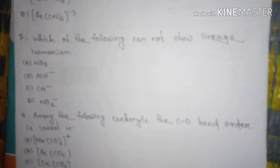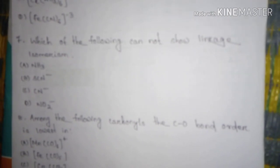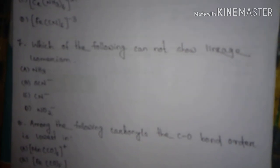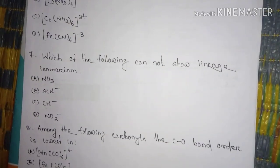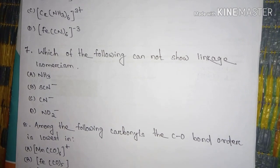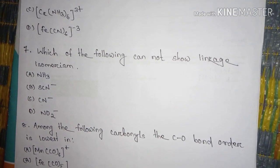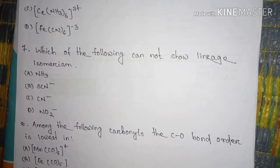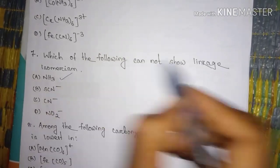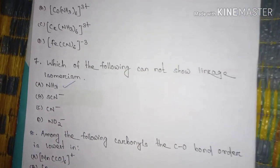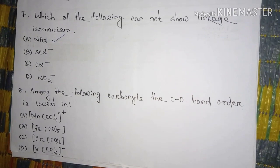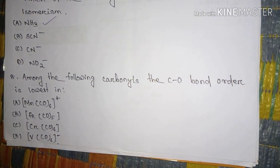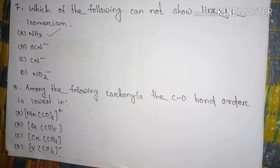Question number seven, which of the following cannot show linkage isomerism? Question number eight, among the following carbonyls the carbon oxygen bond order is lowest in.